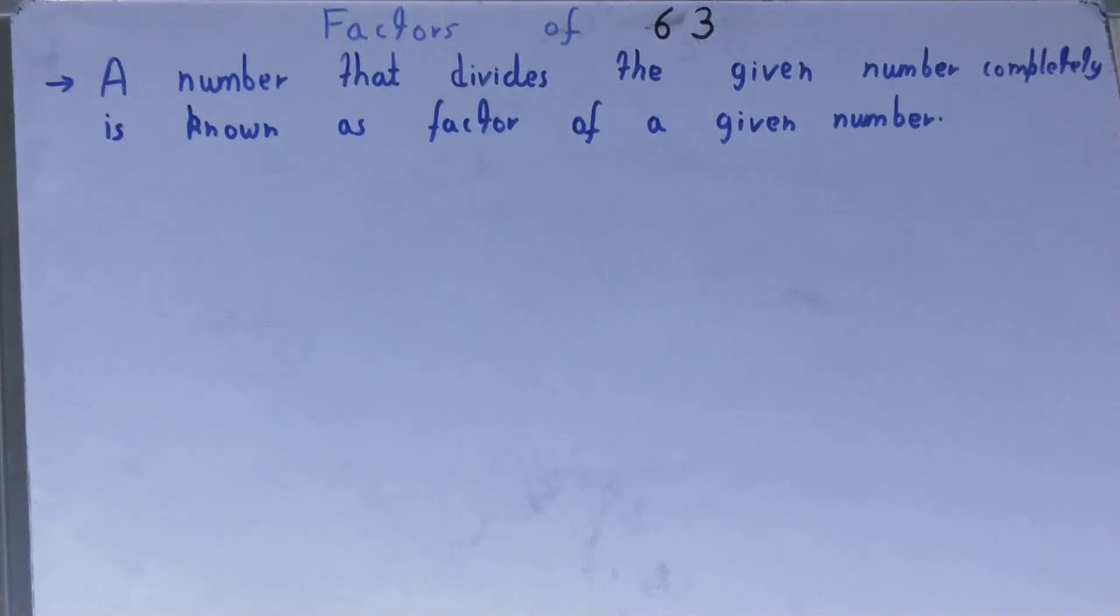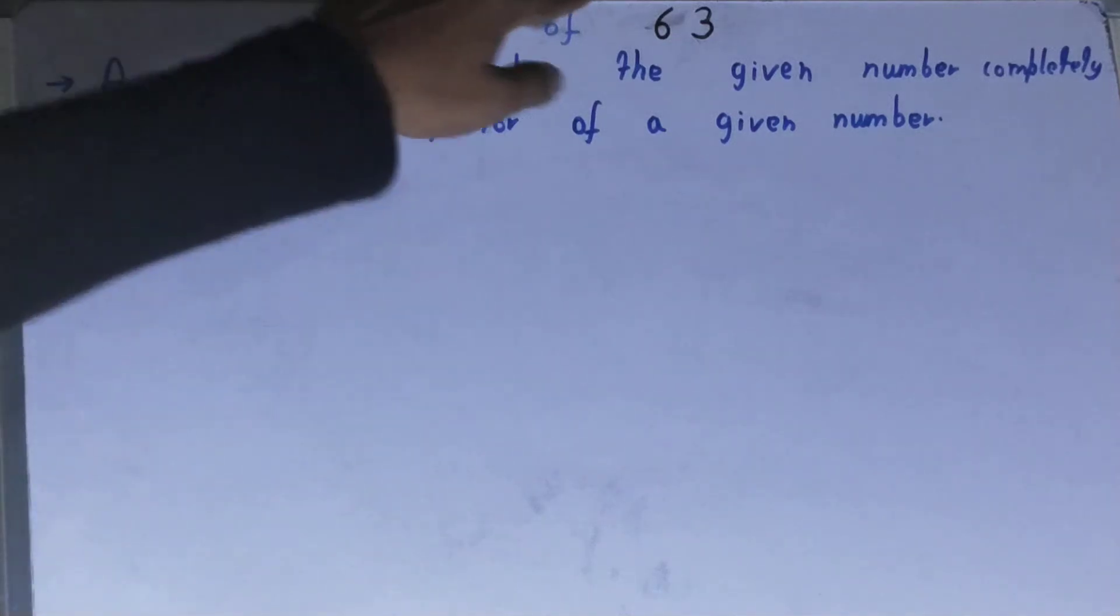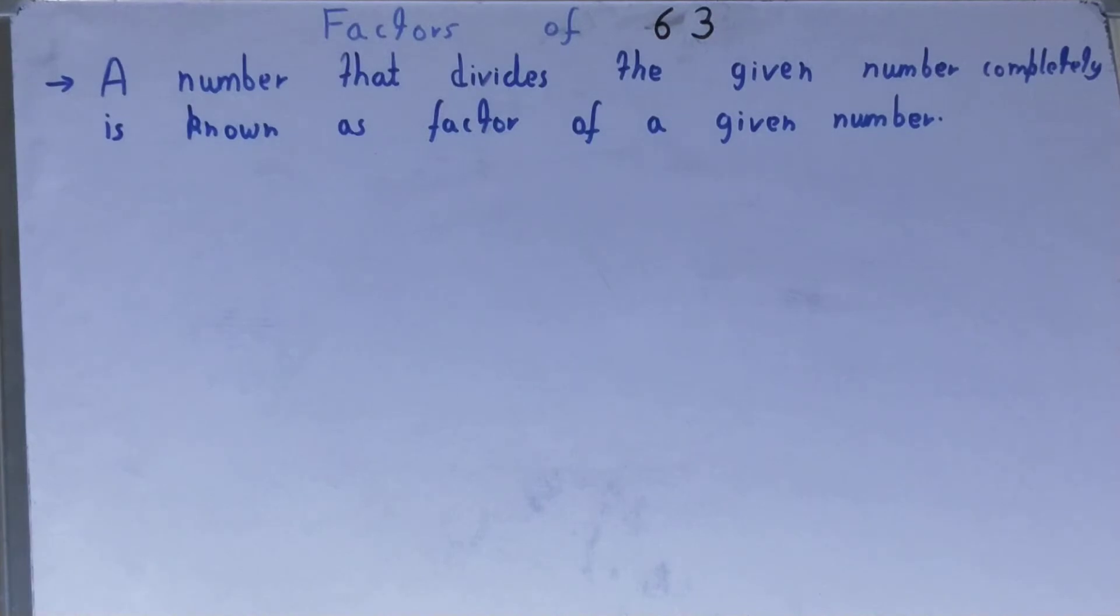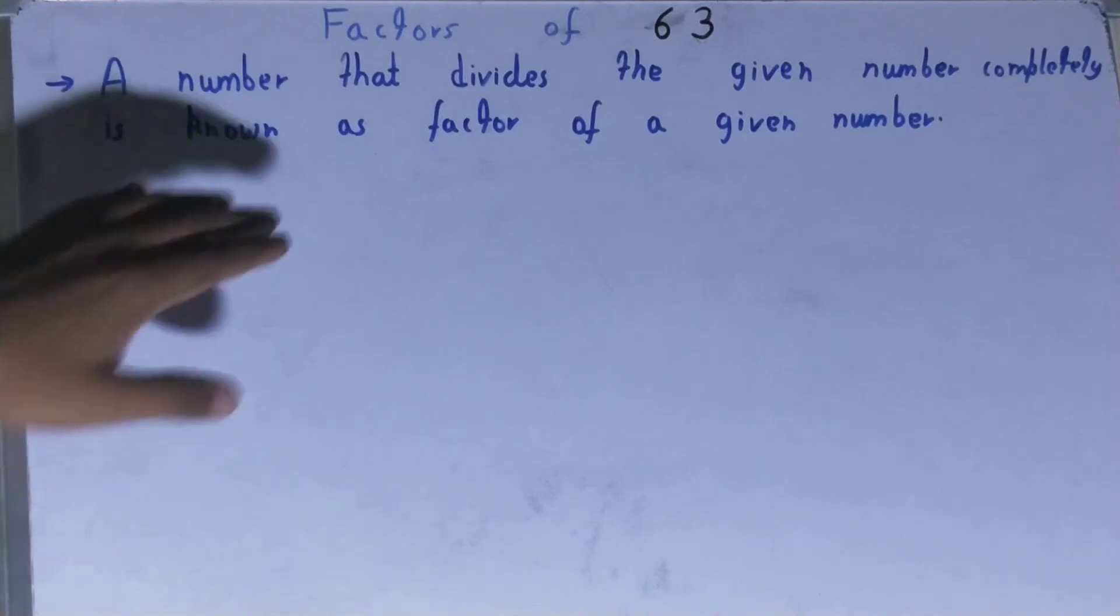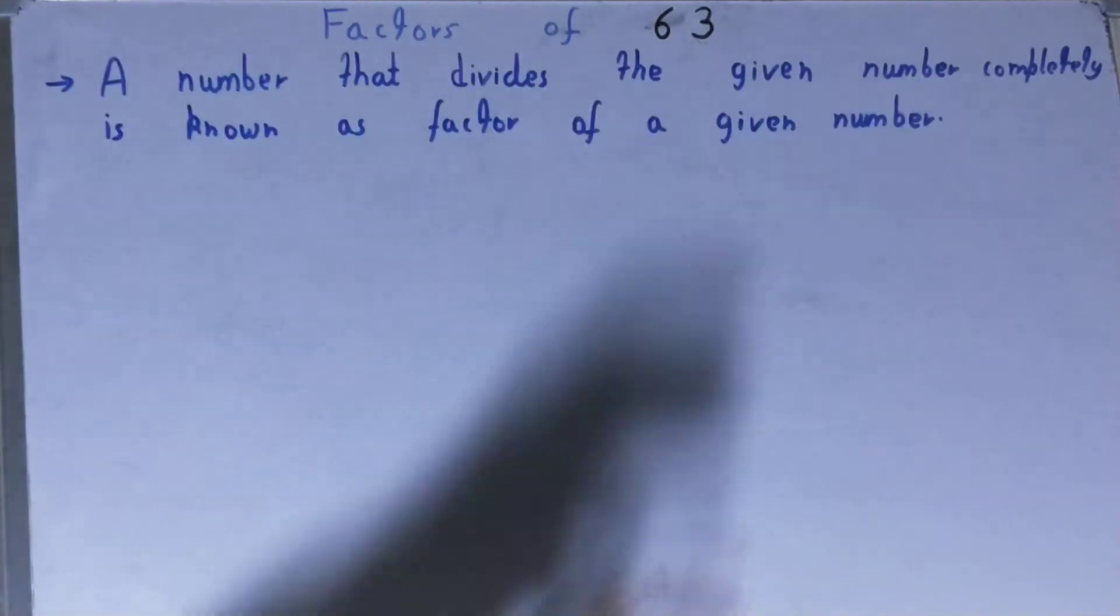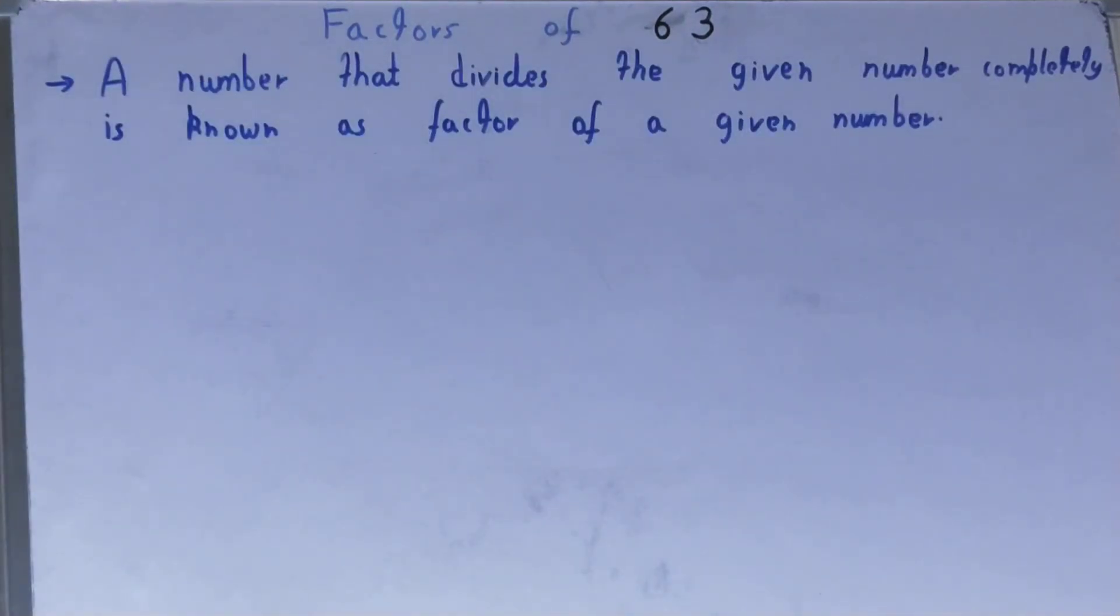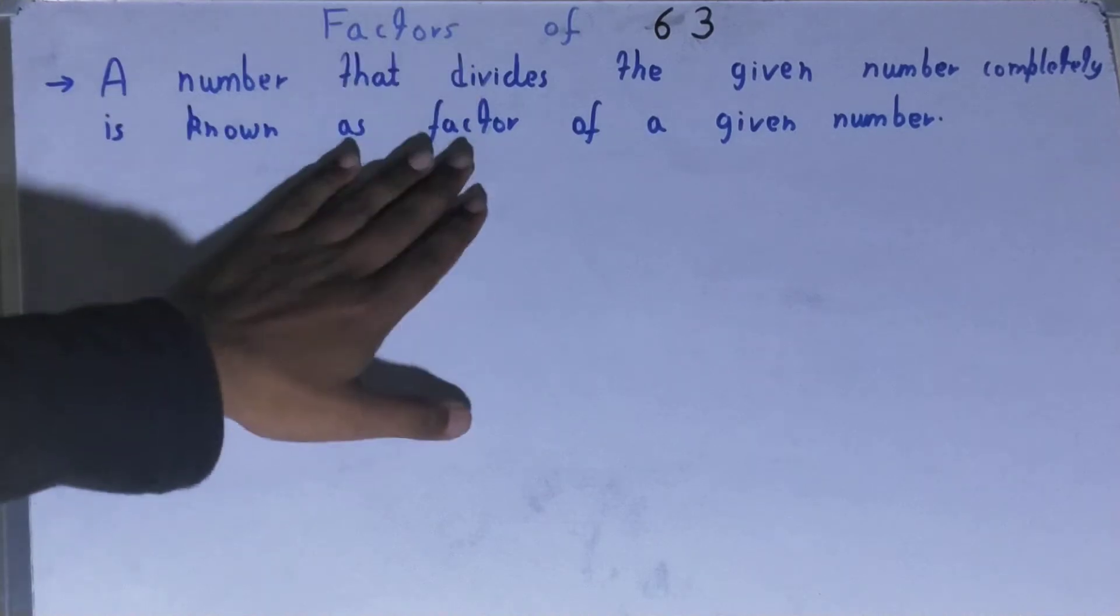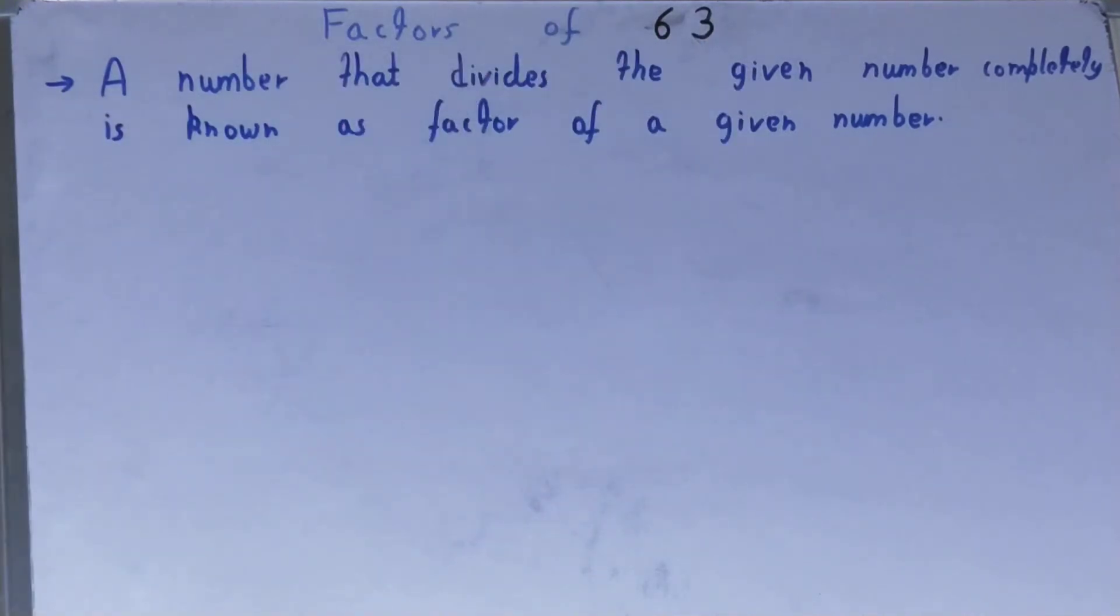Hello friends, and in this particular video I'll be helping you with the factors of the number 63. So let's start. Before we come to our main topic, it's very important to have an idea about what a factor is. A factor is a number that divides the given number completely. Completely means getting the remainder zero. If you get the remainder zero, you can call that number a factor of the given number. That's the basic idea behind finding factors.